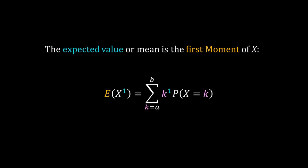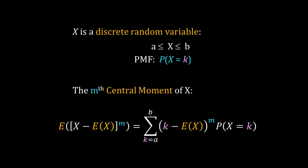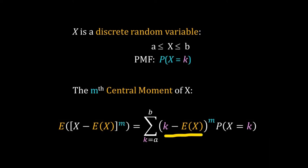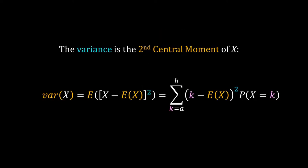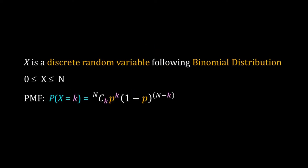Similarly, the mth central moment is defined as the sum of (k − mean(x))^m times P(k) over all possible values of k. Here, k − mean(x) is a deviation of the random variable from its mean, which is itself a random variable — so we are calculating the mth moment of that deviation. The second central moment of a random variable is called the variance, where m = 2.